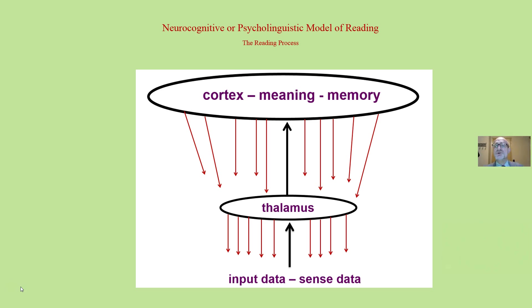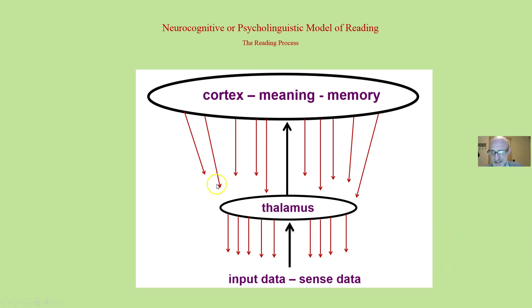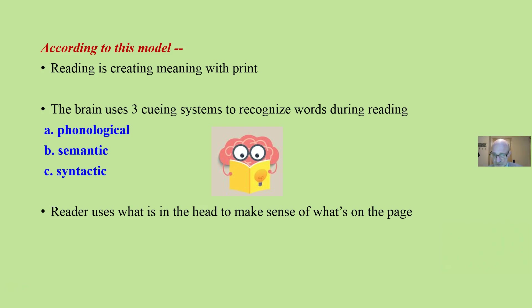The neurocognitive or psycholinguistic model says that information in the head flows down. Here are those corticothalaminic nerve fibers — almost ten times more information is flowing down than is flowing up. We use what's in the head to direct the thalamus and interpret what is on the page. According to this model, reading is not sounding out words — it's creating meaning with print.